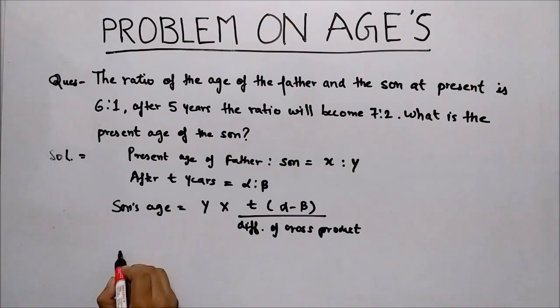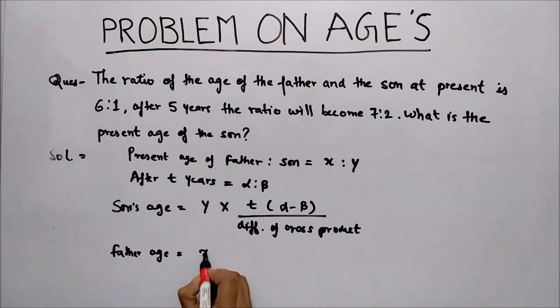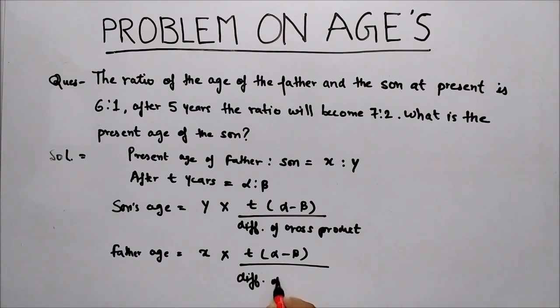And to solve father's age, we have a formula: x times t times (alpha minus beta) upon difference of cross product.